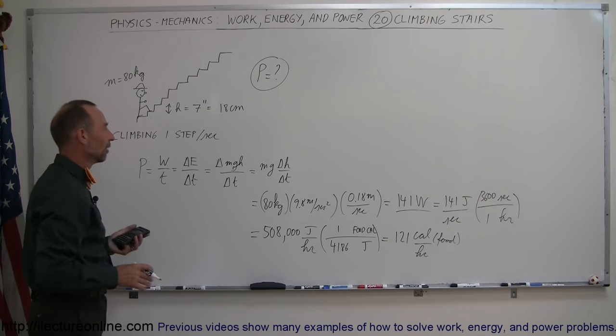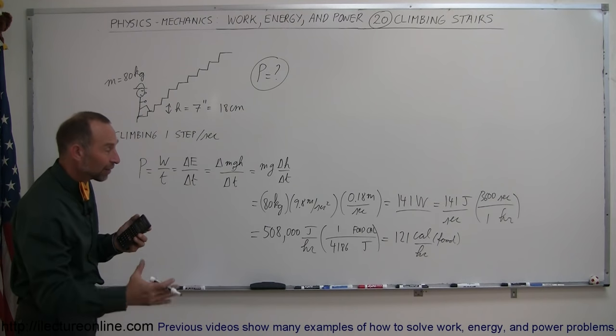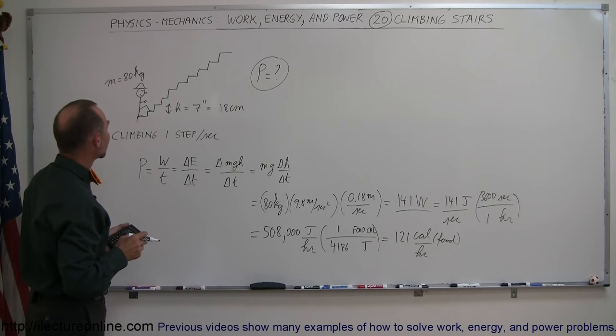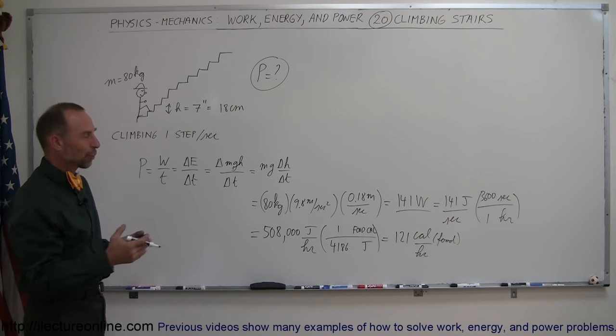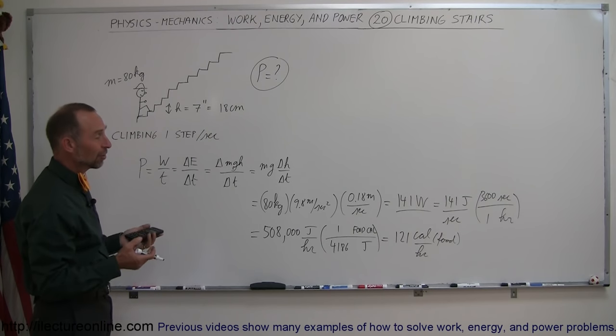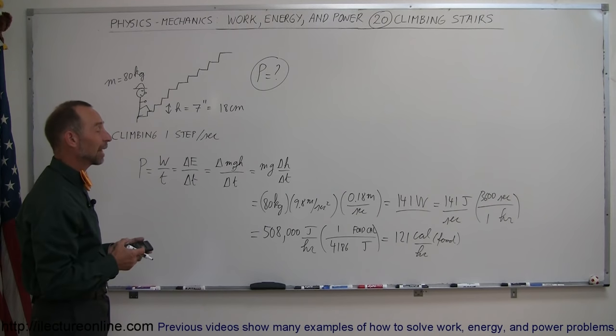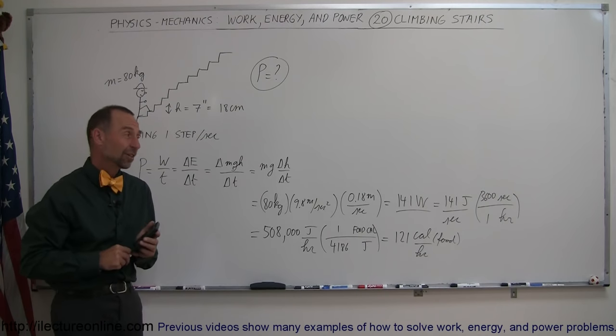Of course, that's ignoring all the other things your body does. That's only the portion that is required to lift you up to that particular altitude. Your body also needs other things as well, so it's typically about three or four times that amount. Walking up a stair master, you can safely say you're probably burning up somewhere around 350 to 500 calories per hour doing that particular exercise.